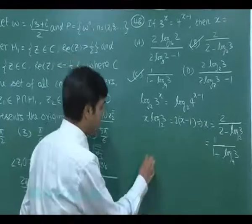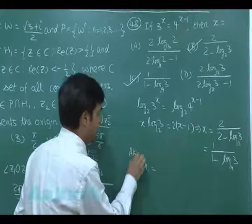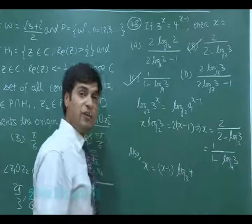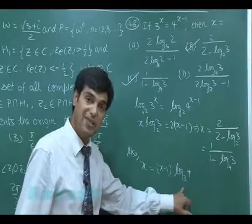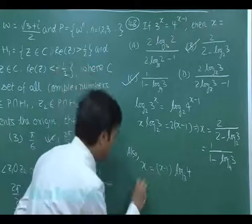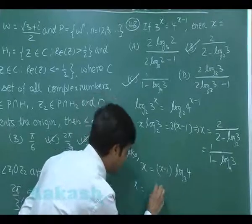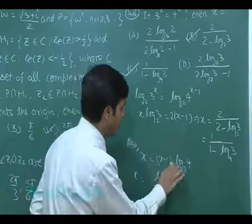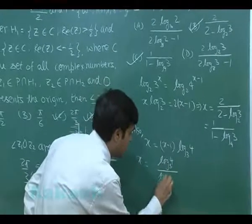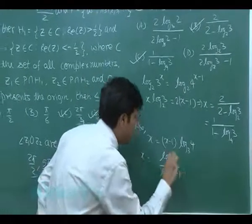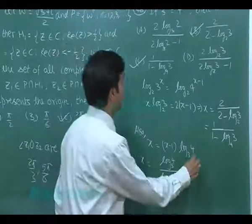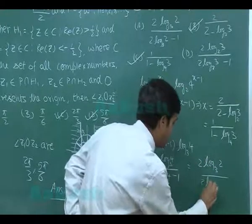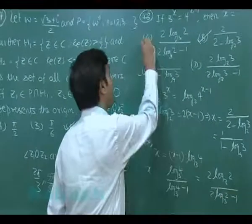Instead of taking log to the base 2, if I take log with the base 3, I will be getting x equals x minus 1 log 4 to the base 3. That's 2 log 2 to the base 3. Taking x on one side, we find x equals log 4 to the base 3 divided by log 4 to the base 3 minus 1, or it can be rewritten as 2 log 2 to the base 3 divided by log 2 to the base 3 minus 1. That is option A.